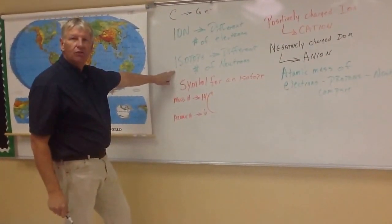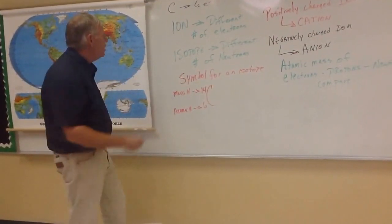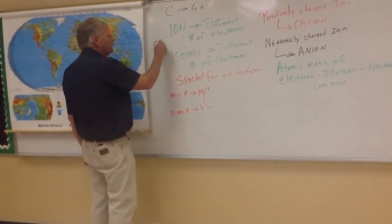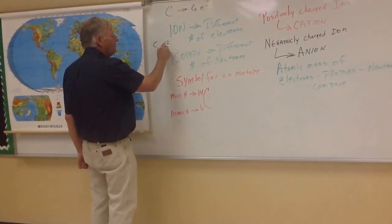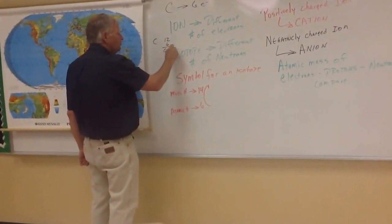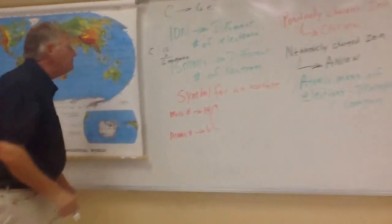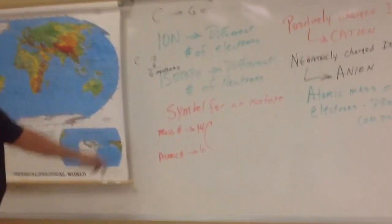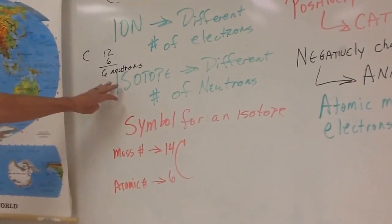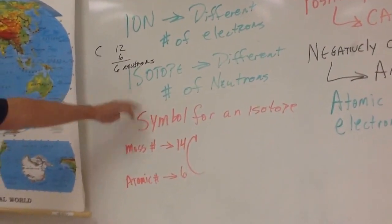An isotope is a different number of neutrons. Carbon, once again, we'll use carbon as an example. The mass number was 12, the atomic number was six, so it has six neutrons. If it has a different number of neutrons — if it has five, or seven, or anything besides six — then it's an isotope.